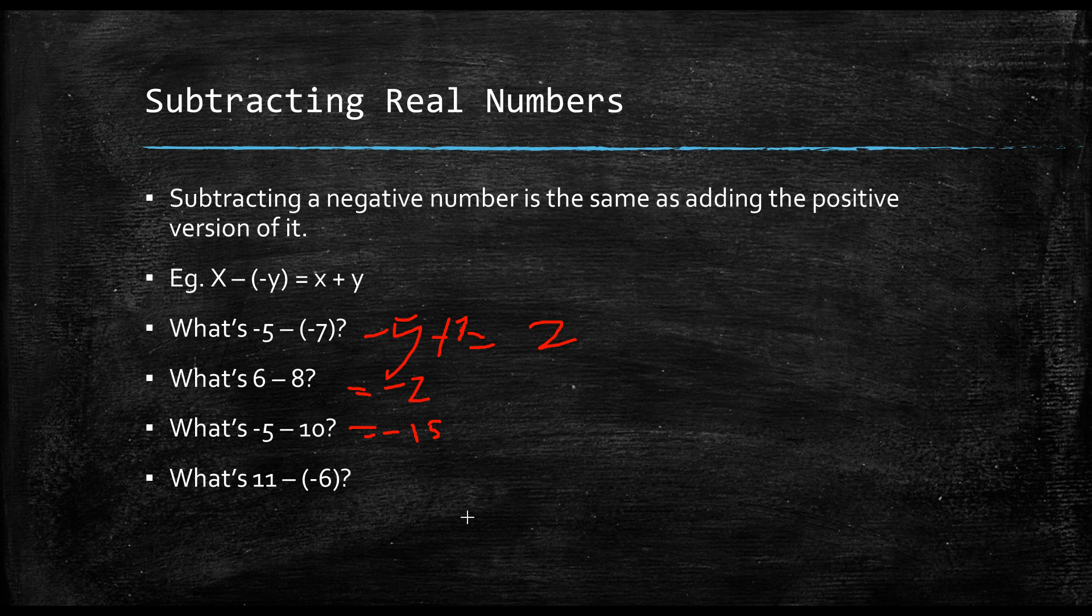It's 11 minus negative 6. So, this is where adding the positive version of it comes in. The two negative signs cancel out. So, it becomes 11 plus 6, which is equal to 17.